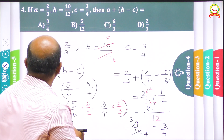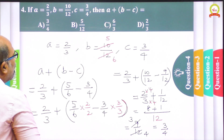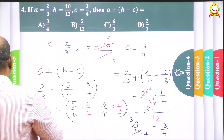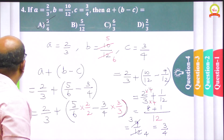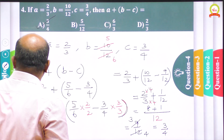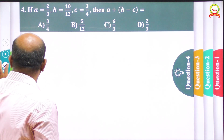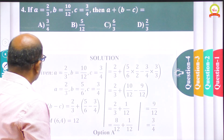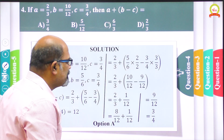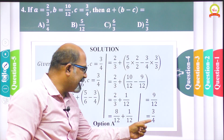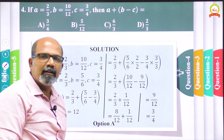Option A is having 3/4, so option A is the correct answer. Let us check — yes, the same 3/4 we are getting and it is showing option A.